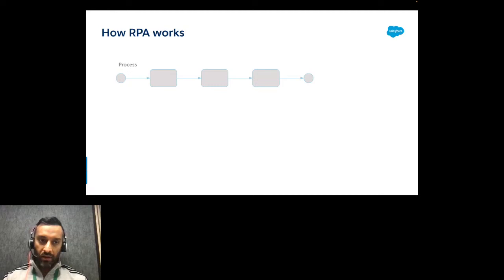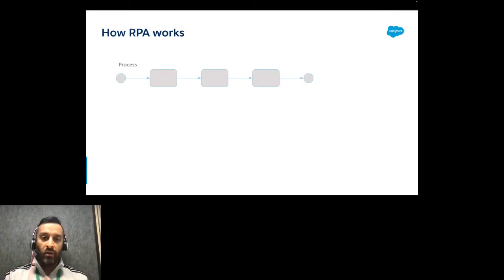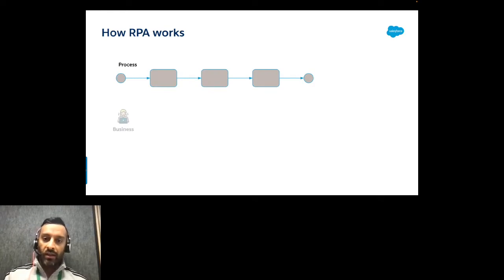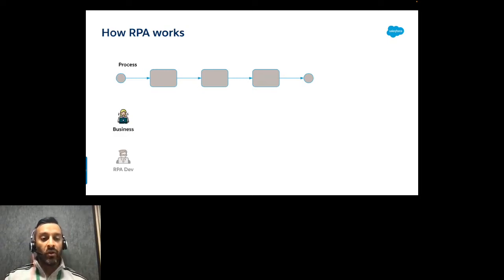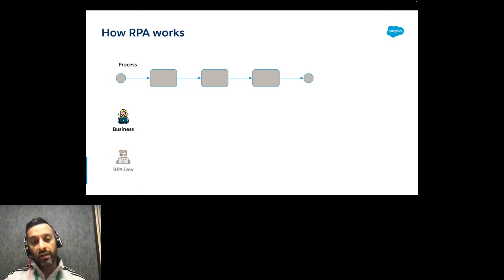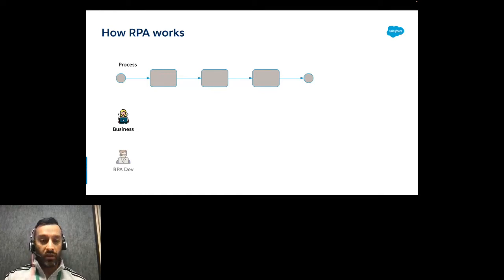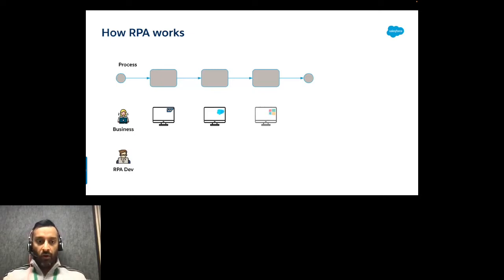How does RPA work? You have a process with a set of activities a human performs repetitively in a replicable pattern. To automate it, business knows the process and a dedicated RPA developer is required for UI automation — UI stands for User Interface, also called GUI or Graphical User Interface.